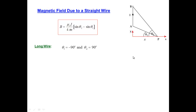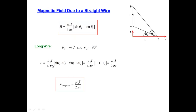If point A is way down at the bottom of the screen going far away, angle theta 1 becomes negative 90 as it goes off to infinity. And as point B goes very far up, angle theta 2 goes to 90 degrees. Plugging those two angles into the expression from the Biot-Savart Law: mu-naught i over 4 pi x, times sine of 90 minus sine of negative 90 — that's 1 minus negative 1, giving a factor of 2 — so we get mu-naught i over 2 pi x. This is the magnitude of the magnetic field due to a long straight wire at distance x.